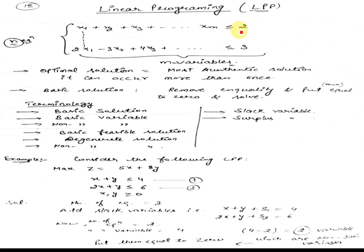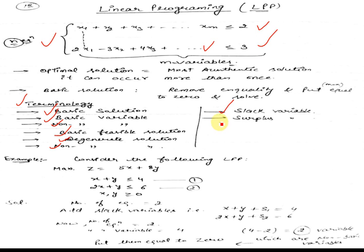As you can see, these are two equations shown. The first equation consists of m variables and the next also consists of m variables. Since there are two equations, I can assume there are n equations — there can be n equations. In this linear programming we are required to calculate the solution of these equations. Before going further, we need to have complete knowledge of some terminologies: basic solution, basic variable, non-basic variables, basic feasible solution, degenerate solution, non-degenerate solution, and slack variables and surplus variable.